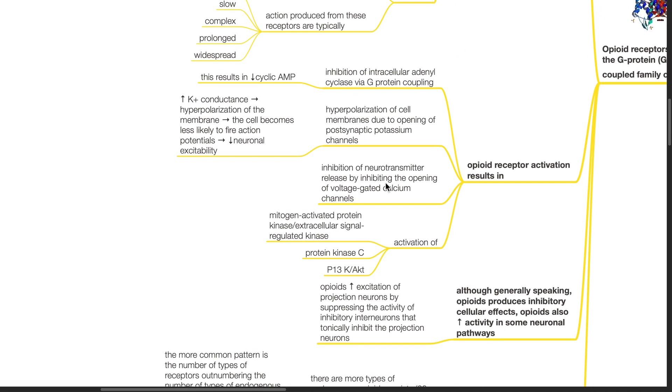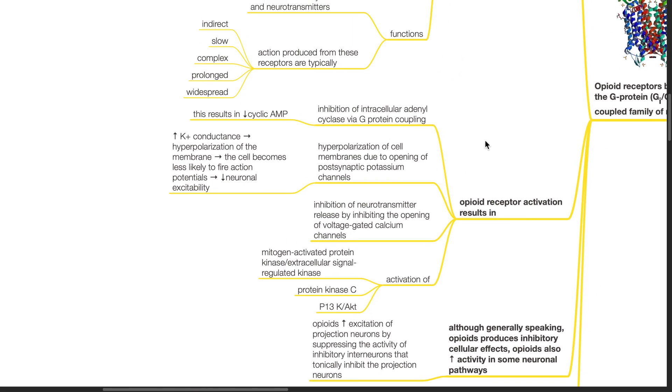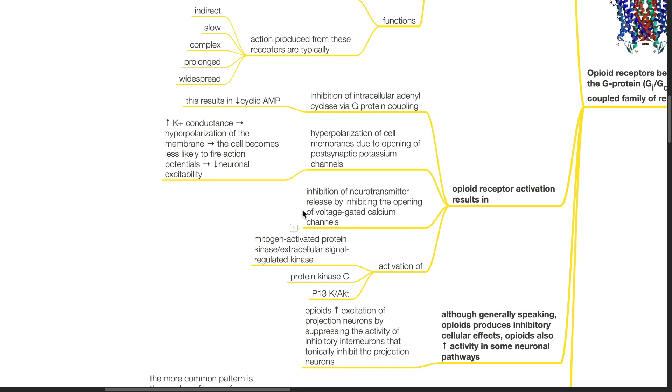Opioid receptor activation results in inhibition of intracellular adenylyl cyclase via G-protein coupling. This results in decreased cyclic AMP. Hyperpolarization of cell membrane occurs due to opening of postsynaptic potassium channels. Increased potassium conductance results in hyperpolarization of the cell membrane. The cell becomes less likely to fire action potentials and there is reduced neuronal excitability. Opioid receptor activation also results in inhibition of neurotransmitter release by inhibiting the opening of voltage-gated calcium channels.